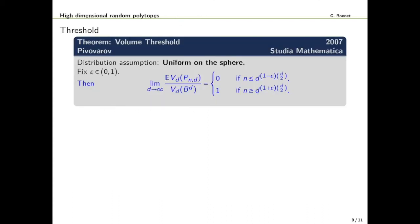How fast does n need to grow such that the volume ratio goes to one has been answered by Pivovarov in 2007 and he actually shows a threshold result with a threshold at n equal d^(d/2). If n grows slightly slower then the volume ratio will go to zero and if n grows slightly faster then the volume ratio will go to one.